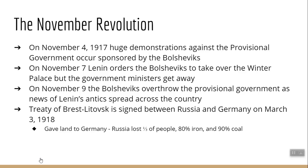As soon as the government was taken over, Russia and Germany began working on a peace treaty. On March 3rd, 1918, the Treaty of Brest-Litovsk was signed, ending the war between Russia and Germany. Germany was given enormous concessions — almost all of European Russia. Russia lost a third of its people, 80% of its iron, and 90% of its coal. Germany then turned to try to win the war in France, but as we know, that did not work.